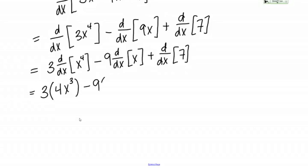Minus 9, now we learned before that the derivative of X is just 1, so that's minus 9 times 1. We also learned previously that the derivative of a constant, any constant standing by itself, is 0, so this is plus 0.